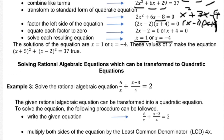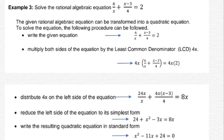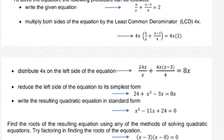Let's solve rational algebraic equations which can be transformed to quadratic equations. Example 3: solve the rational algebraic equation 6 over x plus x minus 3 over 4 equals 2. The given rational algebraic equation can be transformed into a quadratic equation. Write the given equation: 6 over x plus x minus 3 over 4 equals 2. Then multiply both sides of the equation by the LCD. In this case, the LCD is 4x. So 4x times the quantity of 6 over x plus x minus 3 over 4 equals 4x times 2. Distribute 4x: 4x times 6 over x is 24x over x.